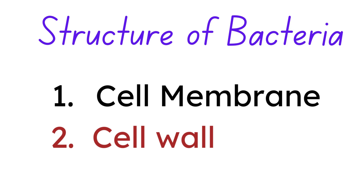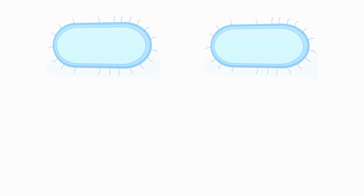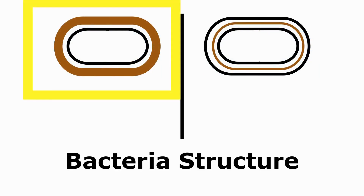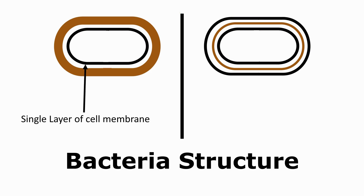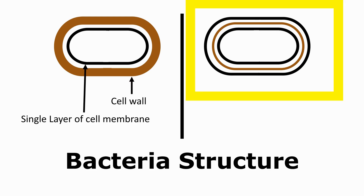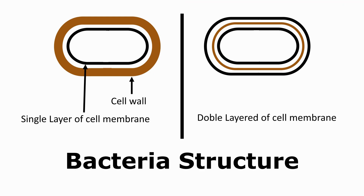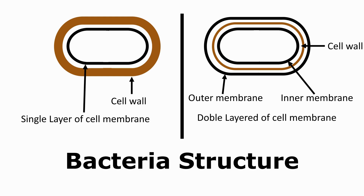Let's understand the difference in bacterial cell structure with an example. These two bacteria are not similar in their structure. The bacteria on the left side has a single layer of plasma membrane, surrounded by a thick cell wall layer. The bacteria on the right side has double-layered membranes — first there is an inner plasma membrane, surrounded by a thin cell wall layer, and again there is an additional membrane which surrounds the thin cell wall layer.